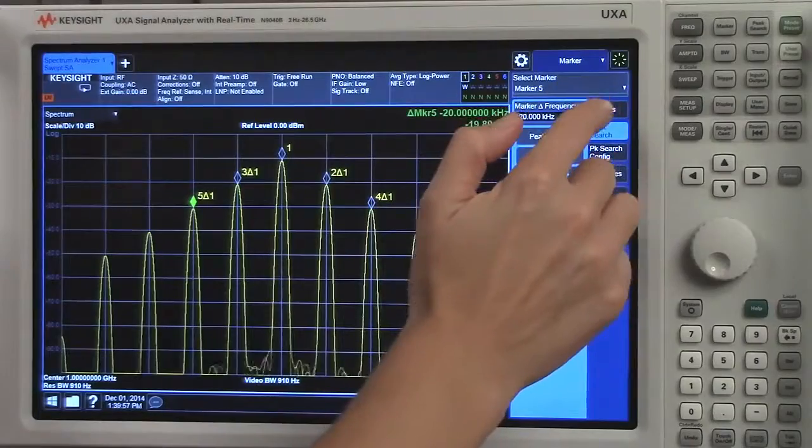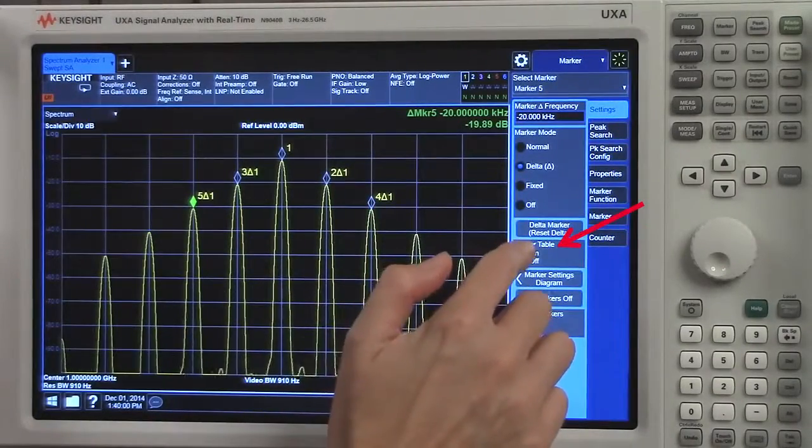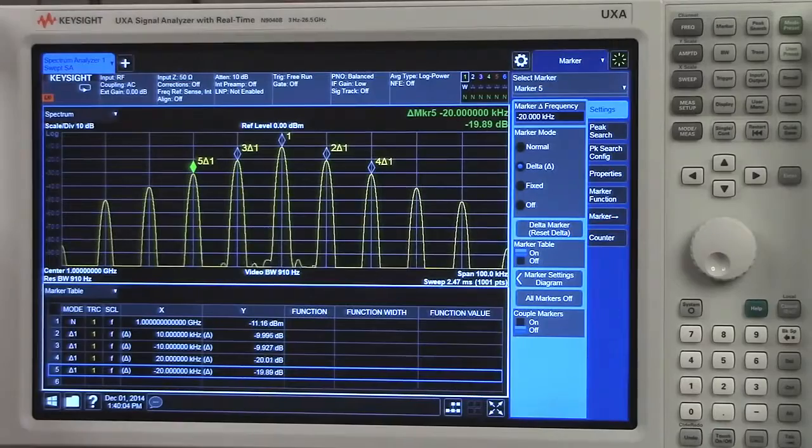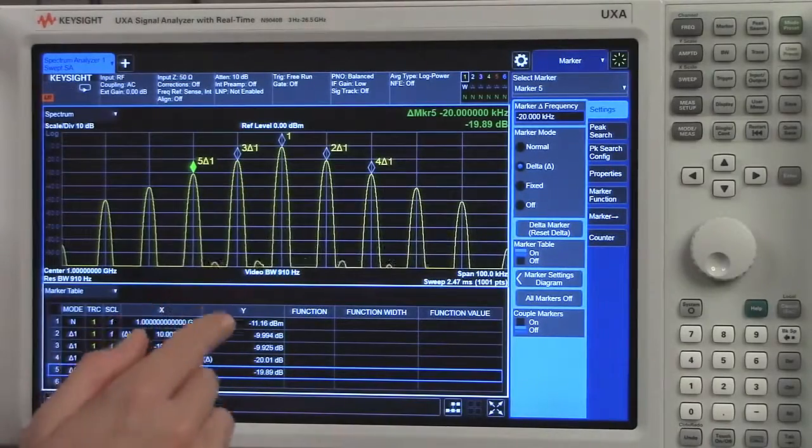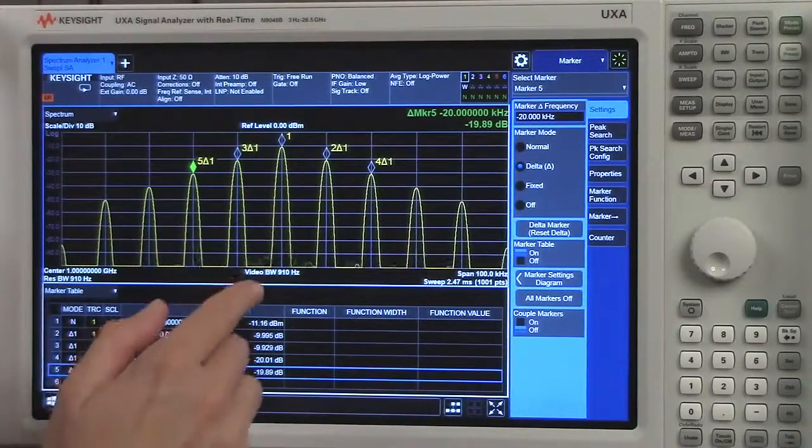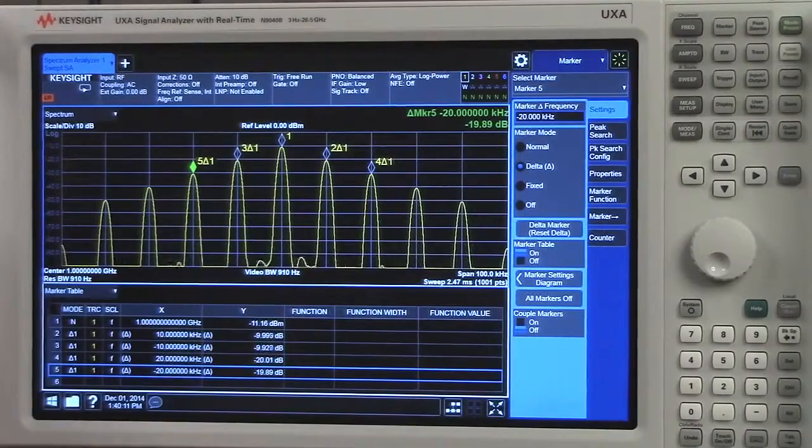Underneath our settings tab, I can go ahead and turn on the marker table. See how quick and easy that is? And I can see their offset frequencies and their amplitudes relative to marker one.